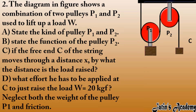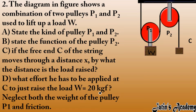Second question: A diagram shows a combination of two pulleys P1 and P2 used to lift load W. We must state the kind of pulley P1 and P2, the function of P2, the distance by which the load is raised if the free end C moves through distance x, and the effort required at C to just raise a load of 20 kgf, neglecting the weight of pulley P1 and friction.